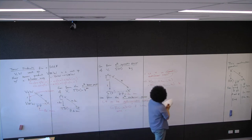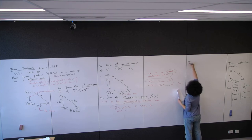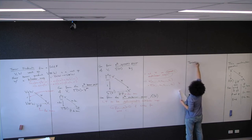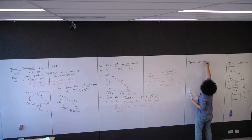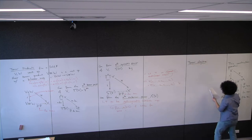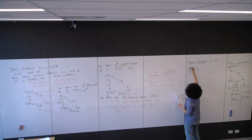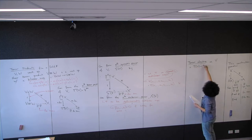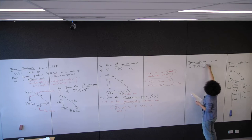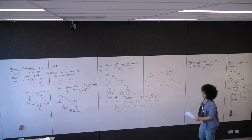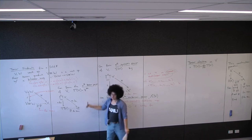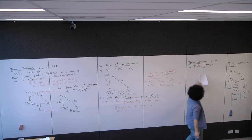The tensor algebra on V, denoted T(V), is the direct sum for n ≥ 0 of the nth tensor power of V. Here we defined the nth tensor power, and now we're just summing them for all n.